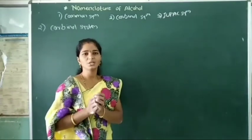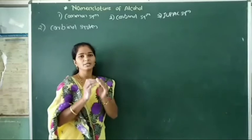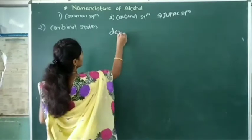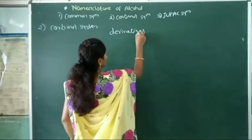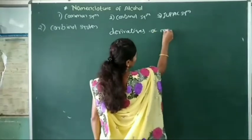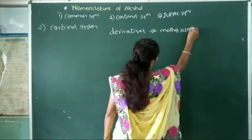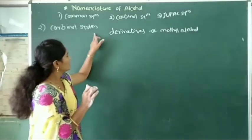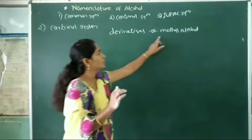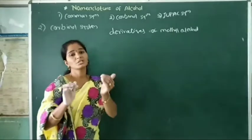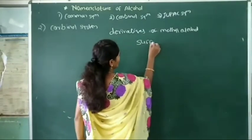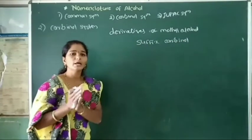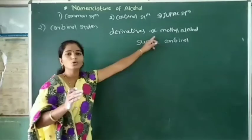In this case of a compound, this alcohol is considered as a derivative of methyl alcohol. In this type of alcohol, this compound is considered as a derivative of methyl alcohol, and here we use the suffix carbynol. So in the carbynol system, methyl alcohol is called carbynol.